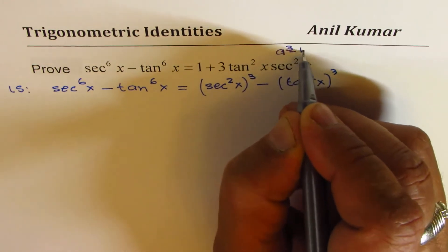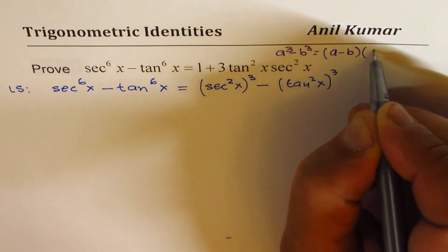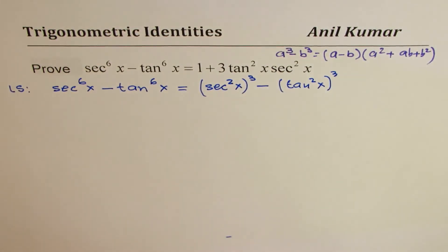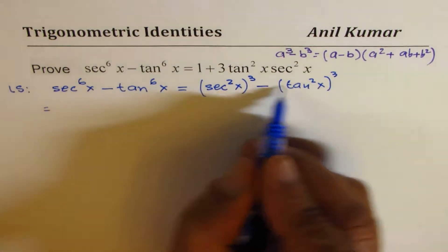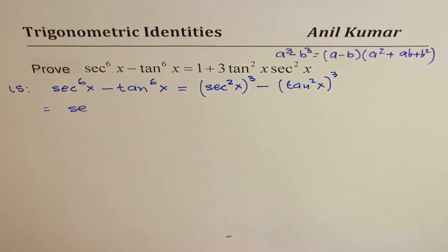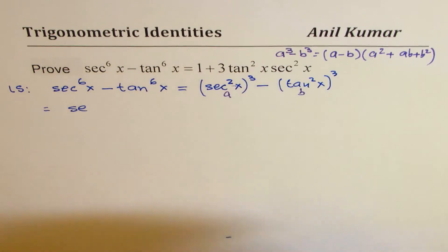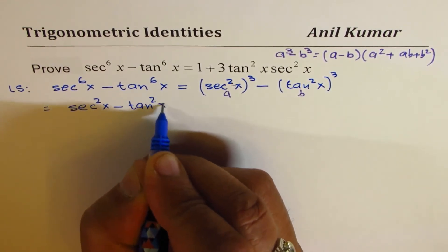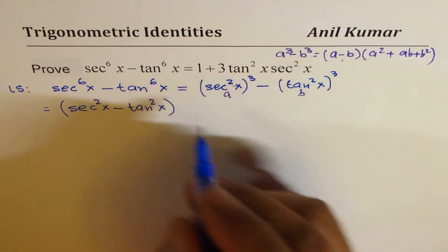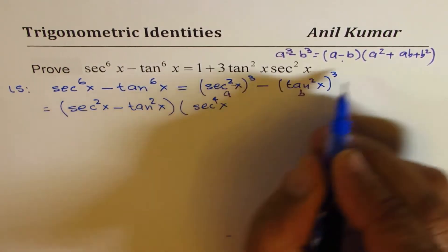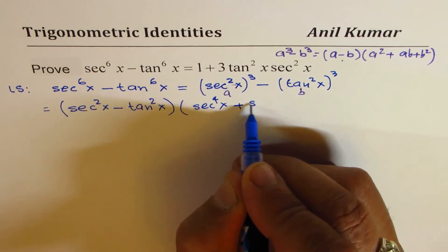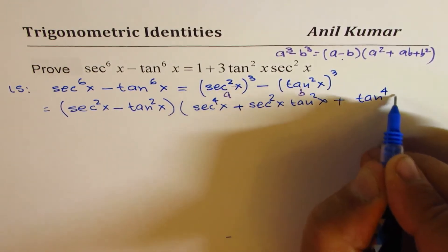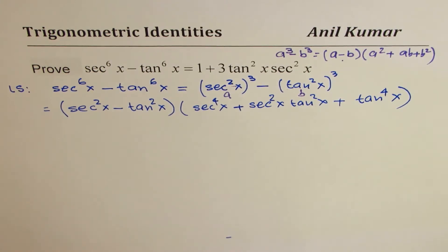I hope you remember the formula for difference of cubes: a cube minus b cube equals a minus b times a squared plus ab plus b squared. So we can factor this, where a is secant squared x and b is tan squared x. We write secant squared x minus tan squared x as the first factor, and the second factor has secant to the power of 4, the product of the two with a positive sign, and tan to the power of 4.